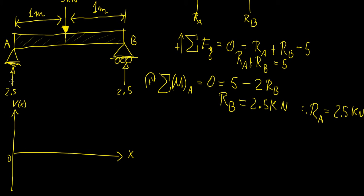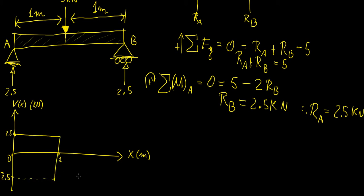Starting at A, we have a 2.5 kN upward reaction, so we jump up to +2.5 kN. This remains constant — a straight horizontal line — until we reach the midpoint at x = 1 m. There, the 5 kN downward load drops the shear force by 5, bringing it to −2.5 kN. It then remains constant at −2.5 kN until support B, where the 2.5 kN upward reaction brings it back to zero. This is the shear force diagram for this loading.